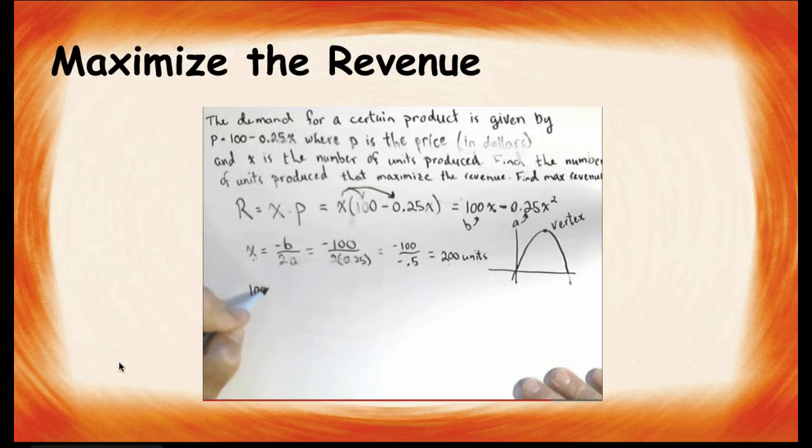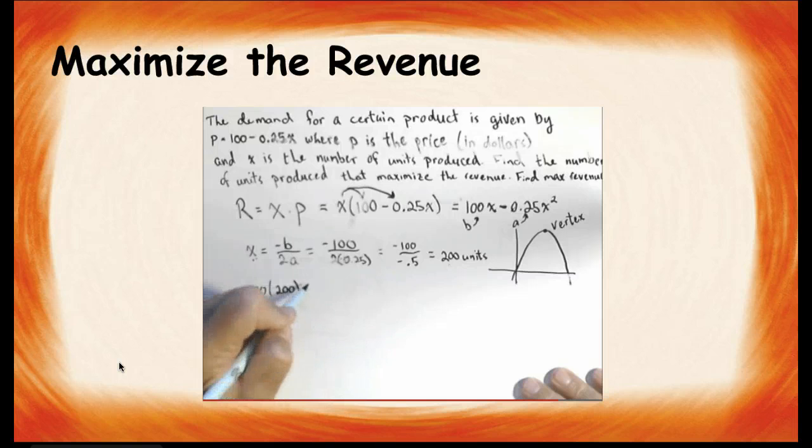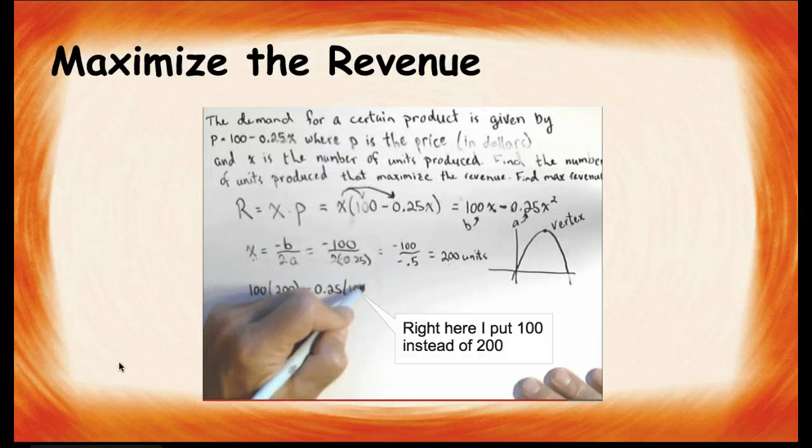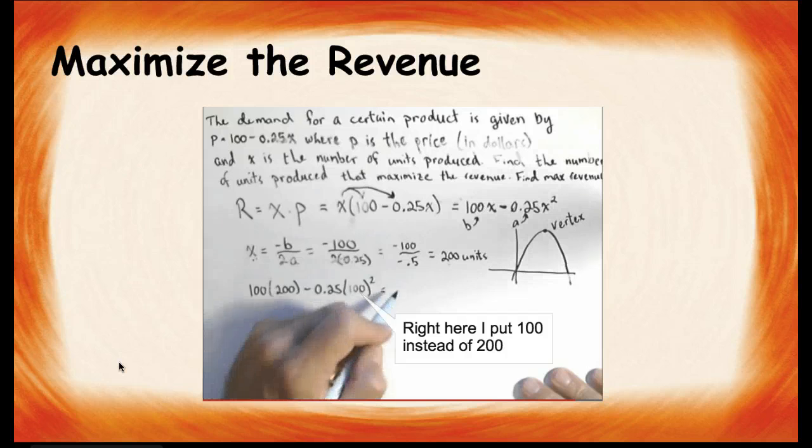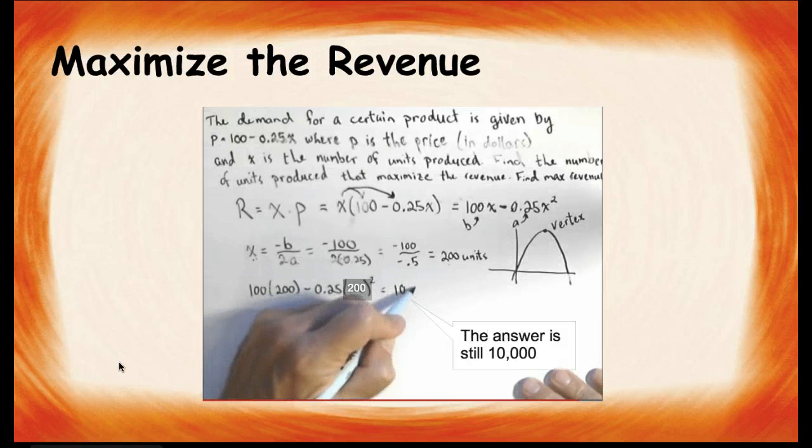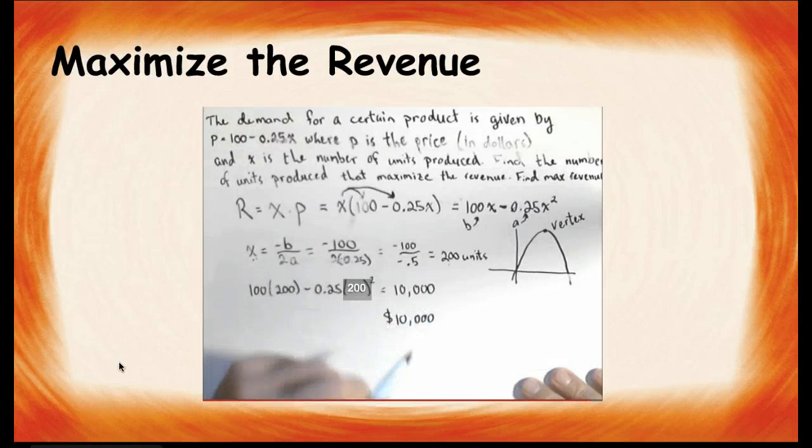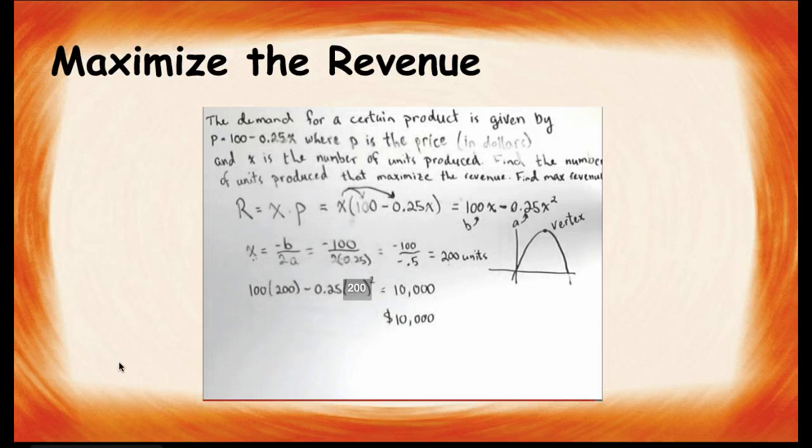So, we'll have 100 times 200 minus 0.25 times 200 squared, which, when we're done calculating, comes out to be 10,000. And now we are talking about the revenue, so the maximum revenue is $10,000 for this company with this given demand.